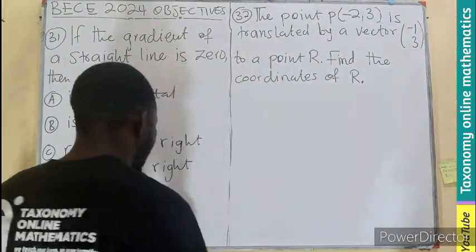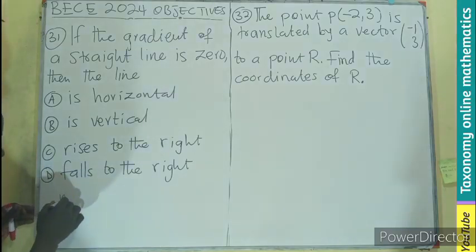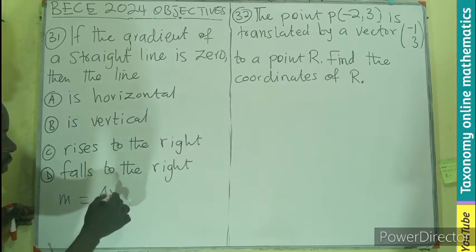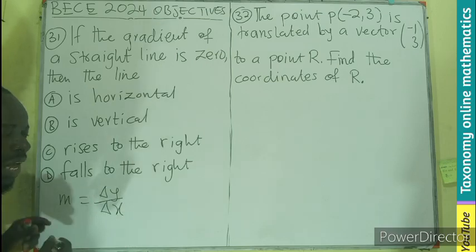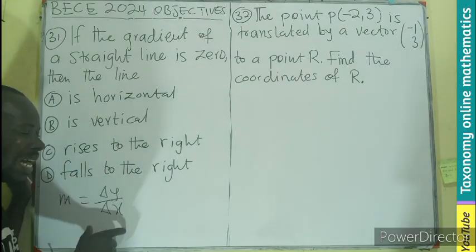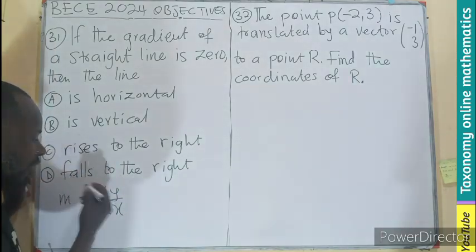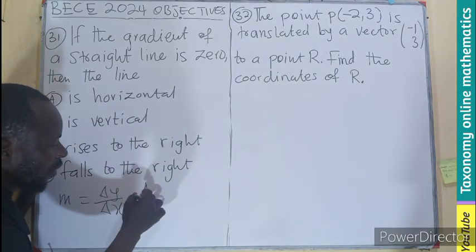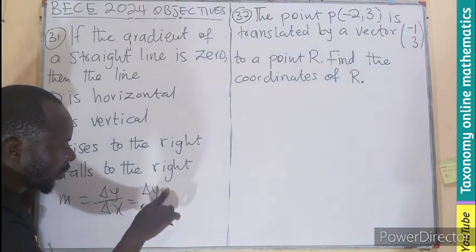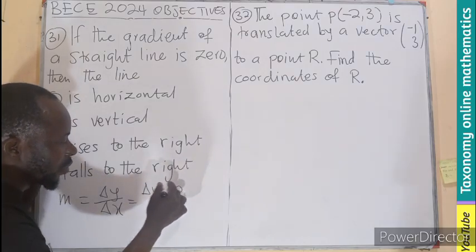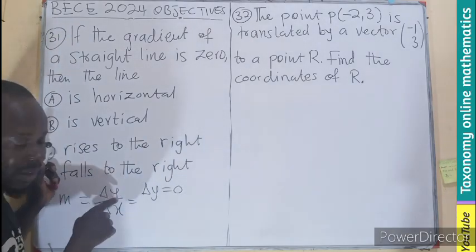Now, we are aware that gradient is the change on the y-axis over the change on the x-axis. So if we are looking at this, if we can get zero, then the possibility is that when your change on the x-axis is what? Zero. On the y-axis.